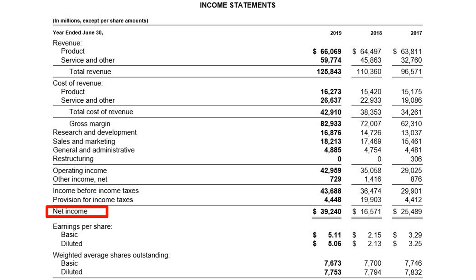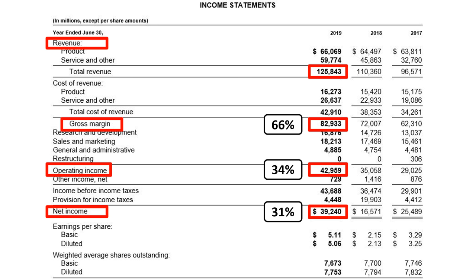This brings us to the bottom line: net income. Net income is revenue minus cost of revenue minus operating expenses, plus or minus other income, minus provision for income taxes — or starting from operating income, it is operating income plus or minus other income minus provision for income taxes. Microsoft has $39 billion of net income on $126 billion of revenue. The return on sales percentage is 31% — for every $100 of revenue, Microsoft earned $31 in net income. This is what a financial analyst focuses on: the absolute amounts of revenue, gross margin, operating income, and net income, as well as their relative size versus revenue — 66% gross margin, 34% operating income, 31% return on sales.